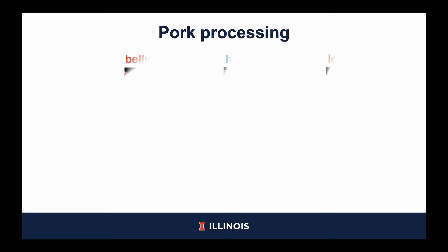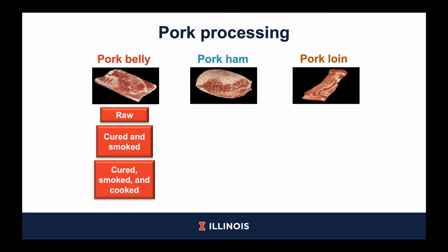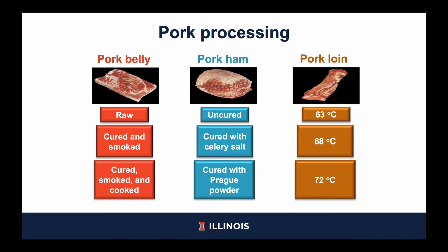For the first experiment, we analyzed three cuts of pork: the pork belly, pork ham, and pork loin. Within each cut, we analyzed three different processing methods. For the pork belly, we analyzed it in its raw form, as a cured and smoked product but still uncooked, and as a cured, smoked, and fully cooked product. For the pork ham, we analyzed it in its uncured form, cured with celery salt, and cured with Prague powder. In addition, all of these pork hams were fully cooked to approximately 73 to 74 degrees Celsius. For the pork loins, we wanted to evaluate the effect that temperature may have on protein quality, so loins were cooked to 63, 68, and 72 degrees Celsius.